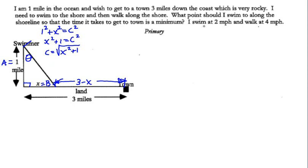Now for time: I swim at 2 miles per hour. How do we change that to time? That's going to be one half hour for each mile. And 4 miles per hour? That's going to be one quarter hour per mile. So we're going to use these values in creating a primary equation for time.